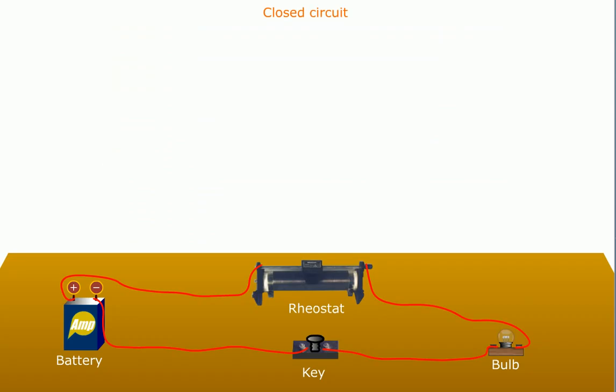An electrical circuit is a continuous path comprising conducting wires and other resistors between the terminals of a battery along which an electric current flows.